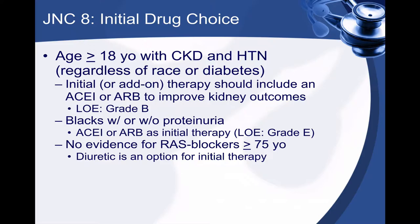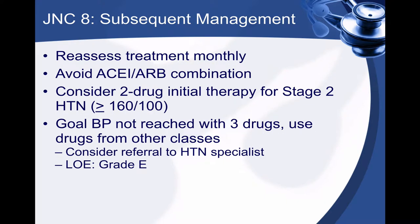With African Americans with or without proteinuria, the benefits of ACEs and ARBs still apply; you may just have to increase the dose more quickly than you would in non-African Americans. There's no evidence for using these blockers in patients greater than 75 years of age, because they're more at risk for hyperkalemia. A diuretic is an option for initial therapy in those patients. Once we put somebody on therapy, we should reassess and treat them monthly.